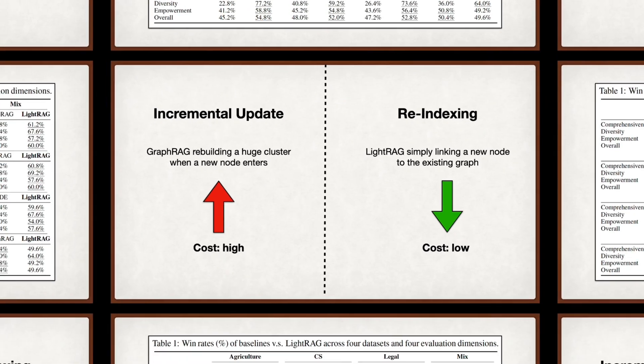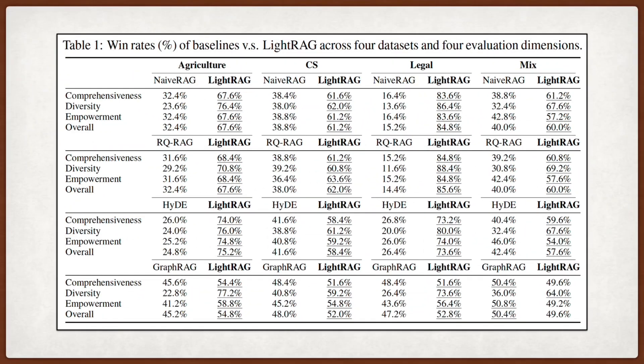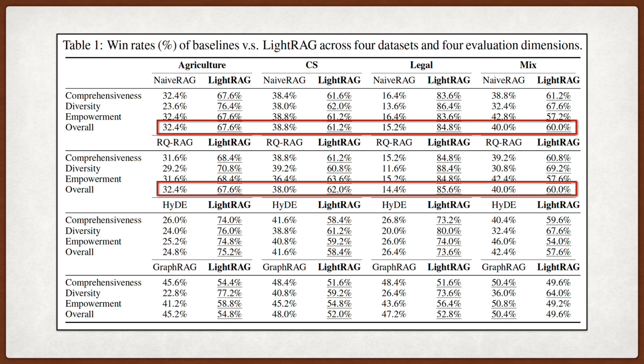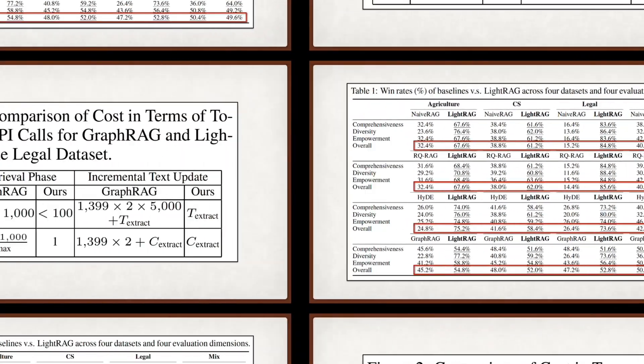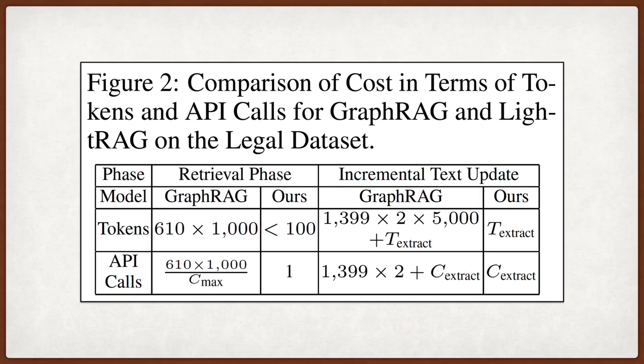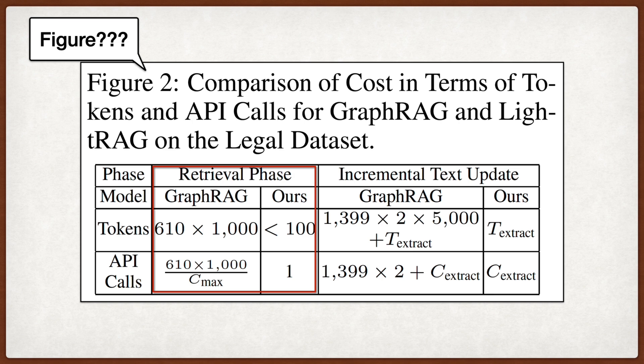They evaluated this on the multi-domain benchmark across agriculture, CS, and legal datasets. The results show that LightRAG consistently outperforms baselines like NaiveRAG and GraphRAG, particularly in comprehensiveness and diversity. The most striking result is on the cost side, where they show that for retrieval, LightRAG uses fewer than 100 tokens and one API call, whereas GraphRAG processes hundreds of thousands of tokens because it has to read through multiple community reports.